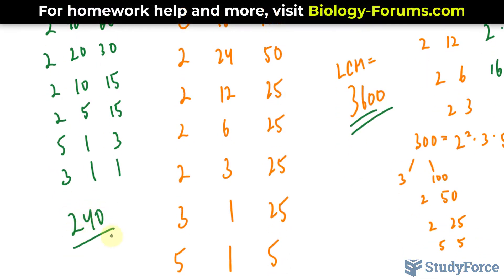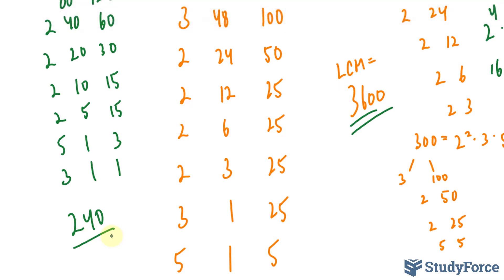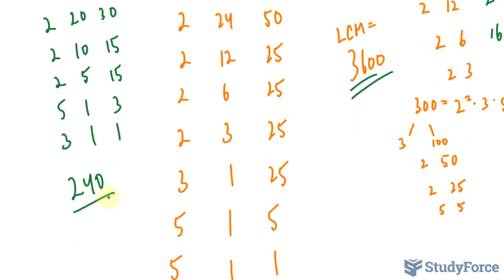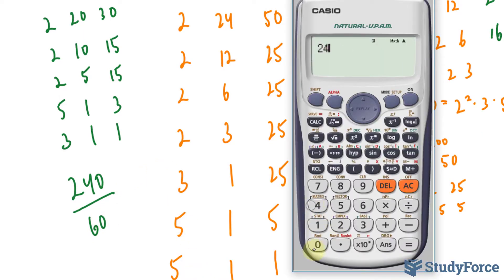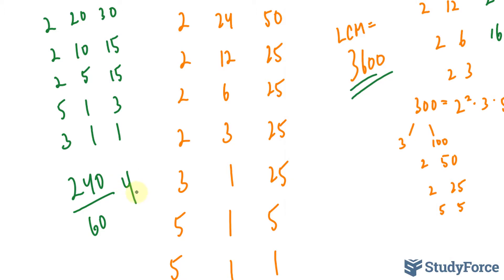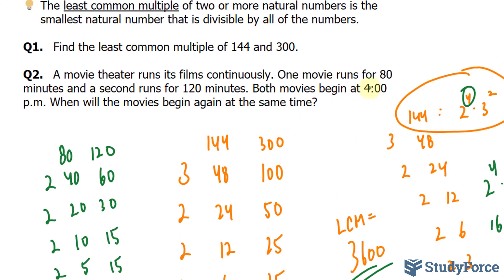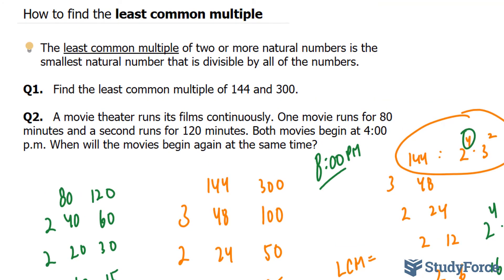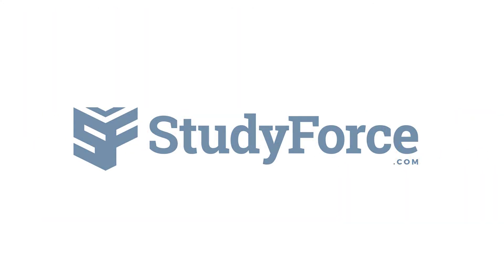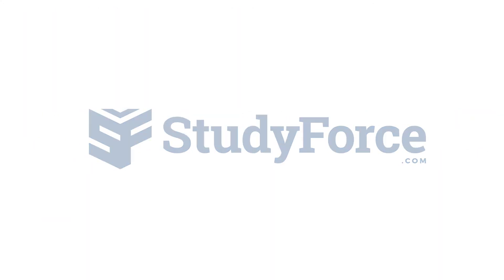Let's interpret that result. The movies will run together again in 240 minutes. Dividing 240 minutes by 60 gives us 4 hours. So 4 hours from 4 p.m., both movies will begin again at the same time — 8 p.m. And there you have it: that is how to find the least common multiple.